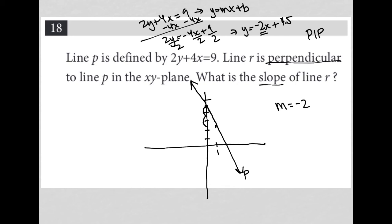The slope of the line that's perpendicular to this will always be the opposite sign. So instead of negative, it'll be positive, and the reciprocal. So instead of 2 over 1, it becomes 1 over 2.